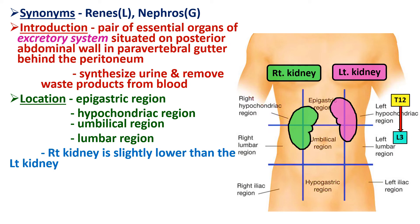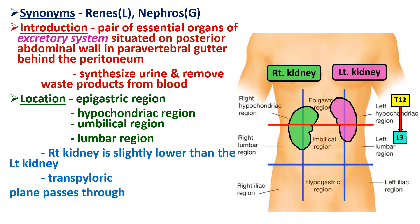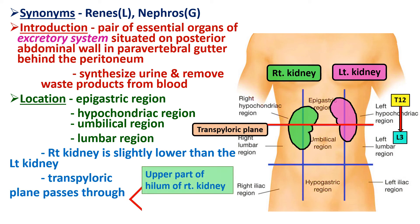The right kidney lies at a lower level than the left kidney. The reason is that kidneys develop in the pelvic cavity and ascend into the abdominal cavity. The ascent of the right kidney is arrested earlier because of the presence of the large, solid liver on the right side. So the right kidney lies lower; the left kidney is narrower, longer, and nearer the median plane. The transpyloric plane passes through the upper part of the hilum of the right kidney and through the lower part of the hilum of the left kidney.